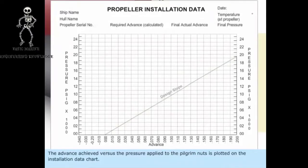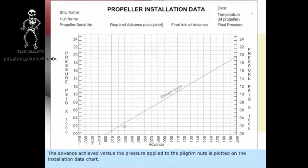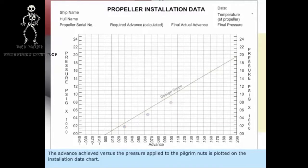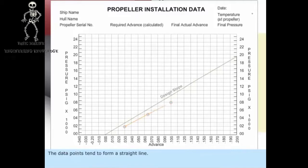The advance achieved versus the pressure applied to the pilgrim nuts is plotted on the installation data chart. The data points tend to form a straight line.